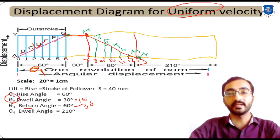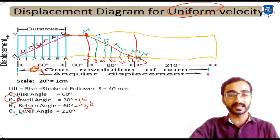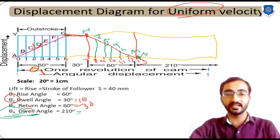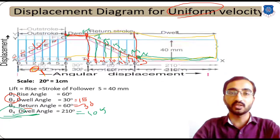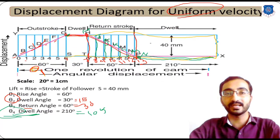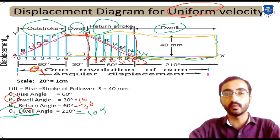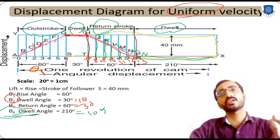After reaching the bottom-most position, the fourth phase (theta 4, dwell) begins. For this dwell, the follower is in a steady-state condition so it does not move. In the remaining 105 mm you sketch a horizontal line representing the dwell position. The complete displacement diagram shows: rise (out-stroke), first dwell, return stroke, and second dwell.